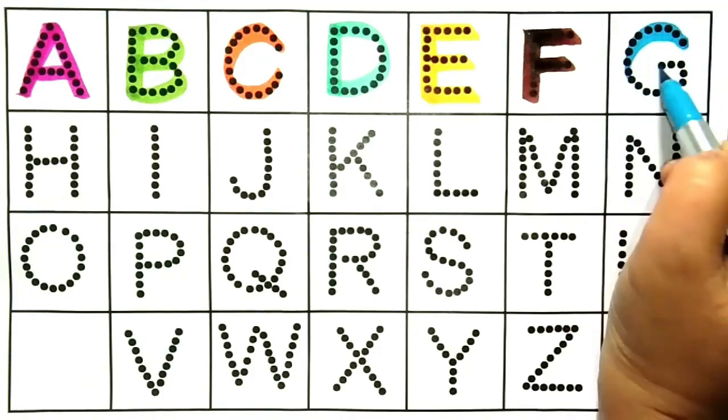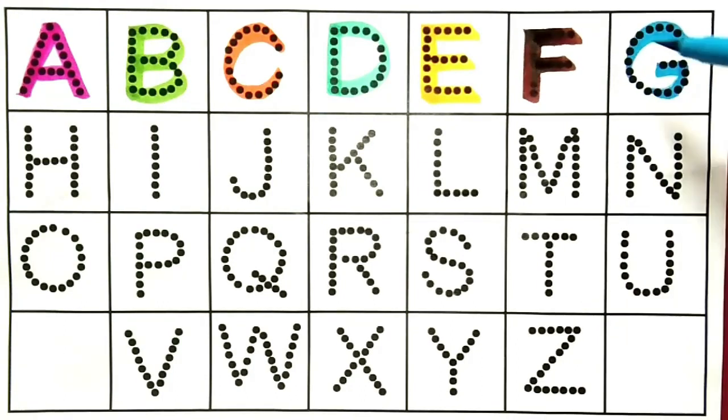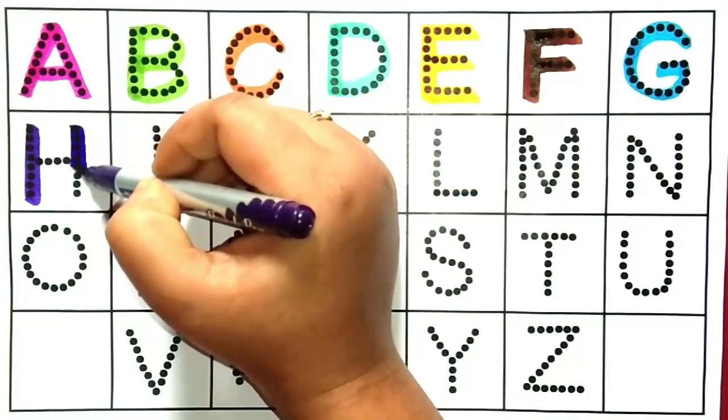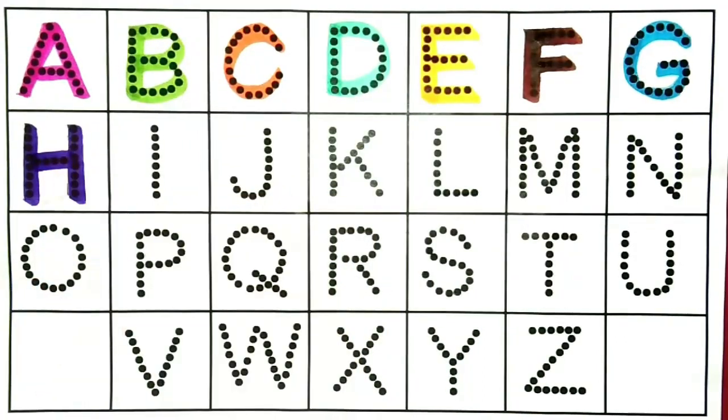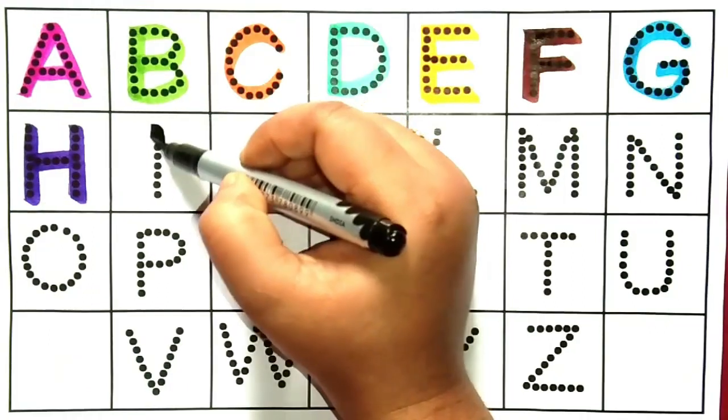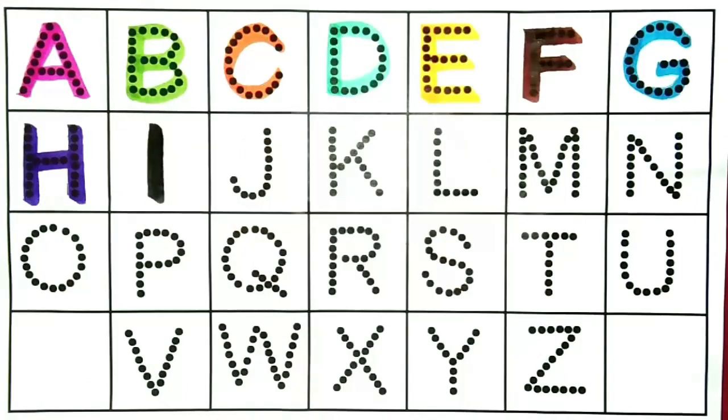G, G for goat, G for goat, yeh hai G. H, H for hen, yeh hai H. I, I for ink, yeh hai I.